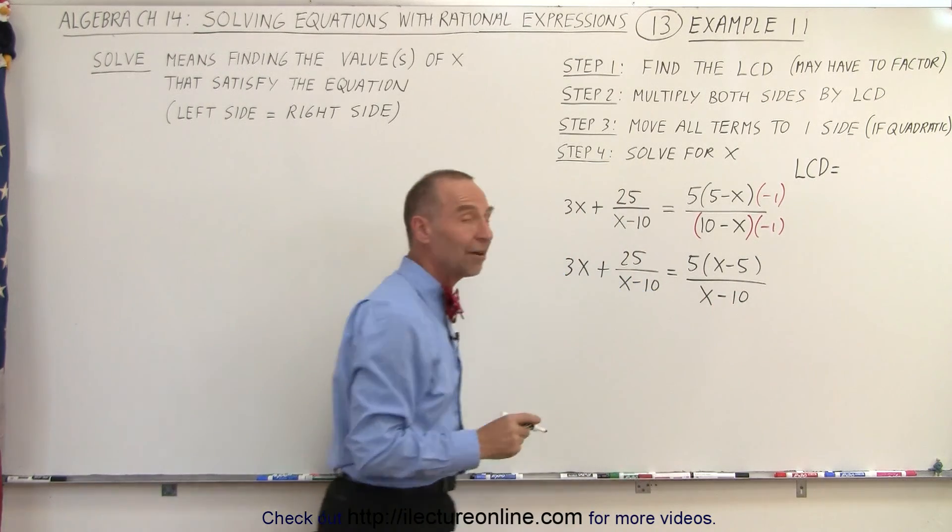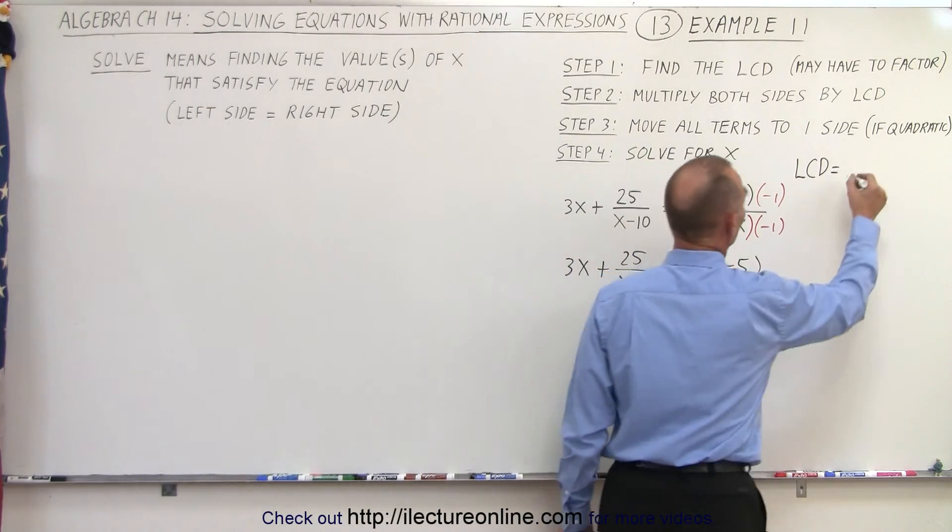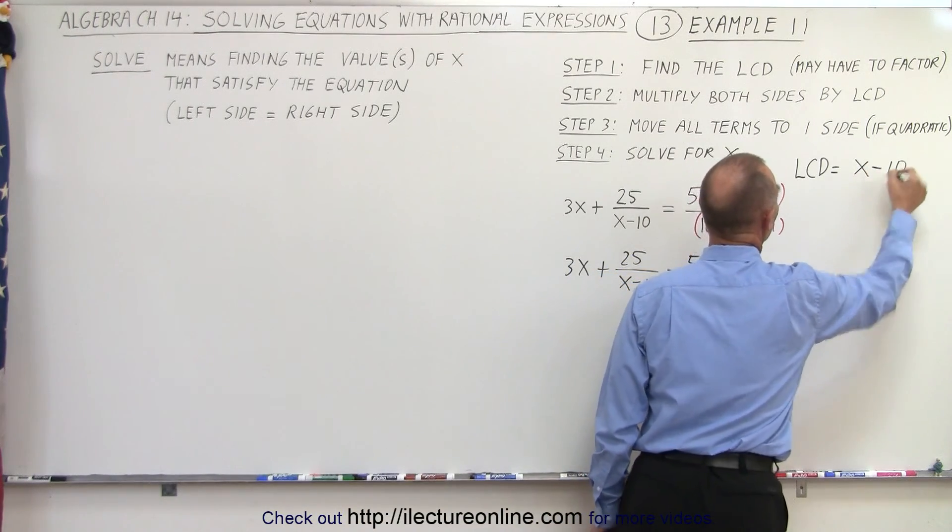x minus 10. And notice, now I have the same denominator on both sides. So the lowest common denominator is now just going to be x minus 10, which makes it easier.